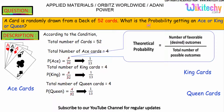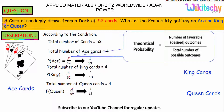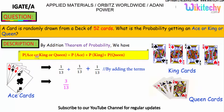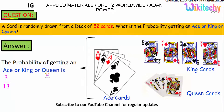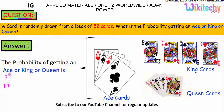The question is the probability of getting an ace, or a king, or a queen. So we need to add these: probability of ace plus probability of king plus probability of queen equals 1/13 + 1/13 + 1/13, which gives us 3/13. The final answer is: the probability of getting an ace, or a king, or a queen is 3/13.